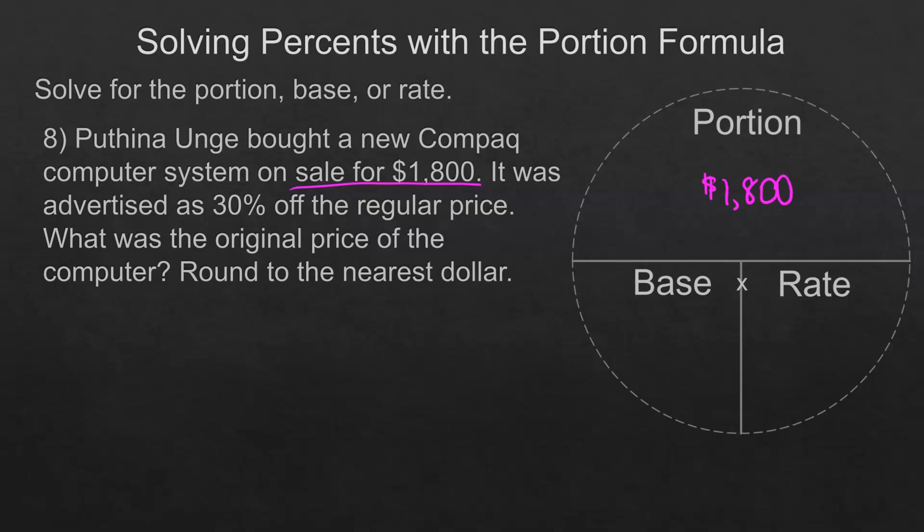Now, this is where it gets a little trickier. It was 30% off the regular price. So we actually are not going to use 30% for our calculation to find this base. We're going to use 70%. That's because 70% of the base price is the sell price. If I take 70% of the base, I get the portion or the sell price in this case.